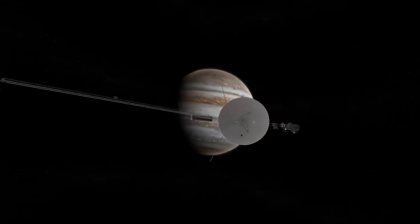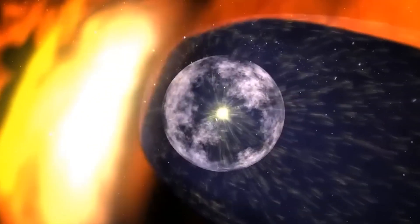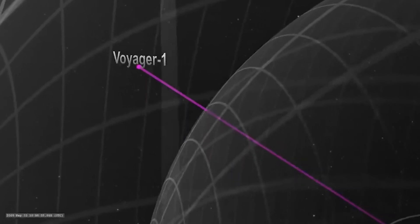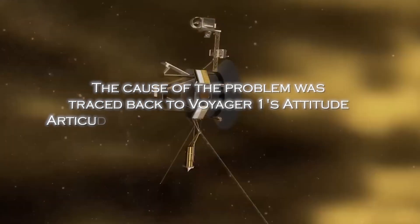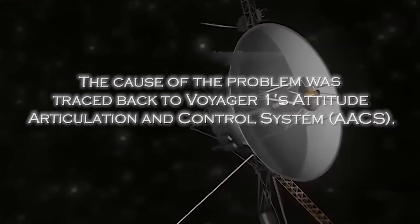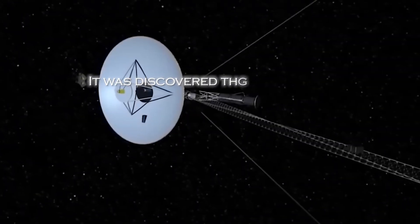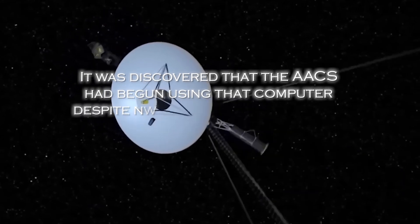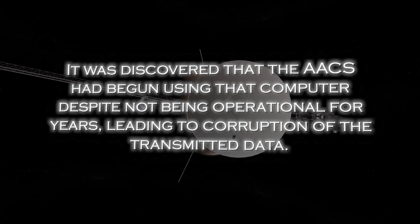After months of receiving encrypted data from the spacecraft, scientists and engineers were finally able to restore clarity and reliability to the information coming from the far reaches of interstellar space. The cause of the problem was traced back to Voyager 1's Attitude Articulation and Control System, or AACS, especially an onboard computer that was supposed to be inactive. Surprisingly, it was discovered that the AACS had begun using the computer despite not being operational for years, leading to corruption of the transmitted data.